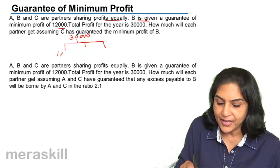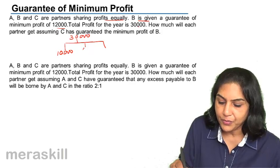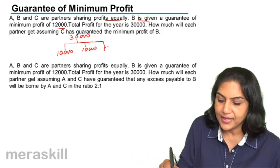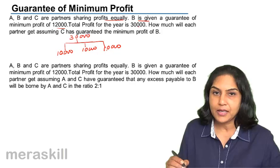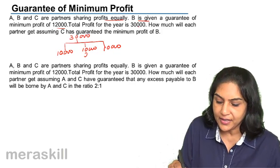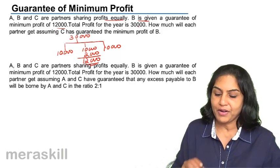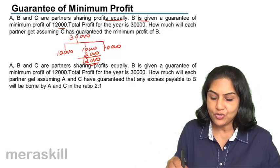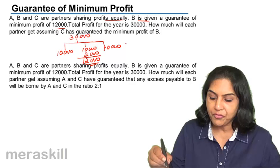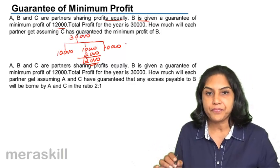A will get 10,000 since they are equal partners. They would all be getting 10,000 each. But B was guaranteed another 2,000. That means B was guaranteed a total of 12,000. This 2,000 has to come either from A or from C or from both of them.